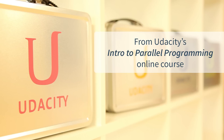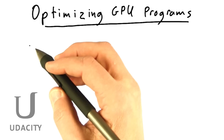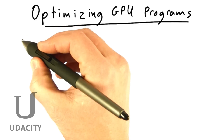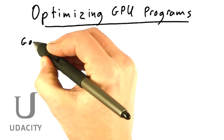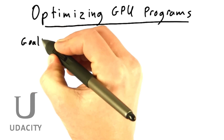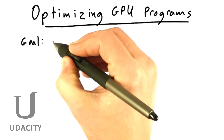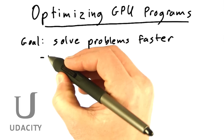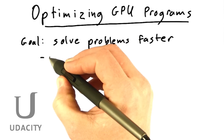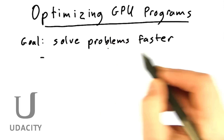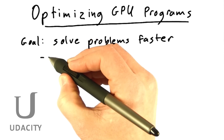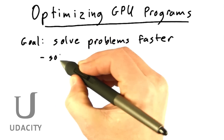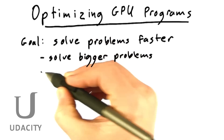Today we're going to talk about optimizing GPU programs. The whole reason we want to use a parallel platform like the GPU is to solve problems faster. And in turn, the reason we might want to solve problems faster could be simply because we want to solve a problem faster, or more often it's because we want to solve bigger problems or solve more problems.